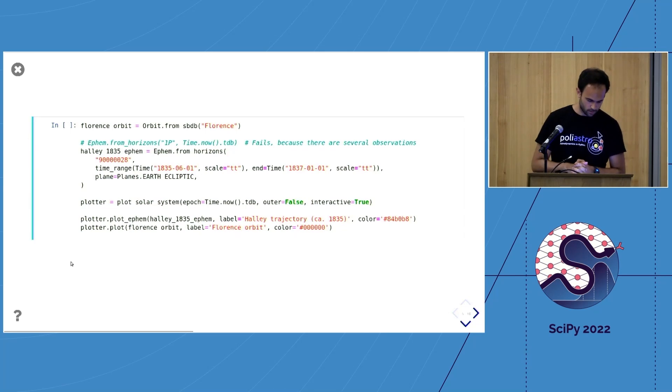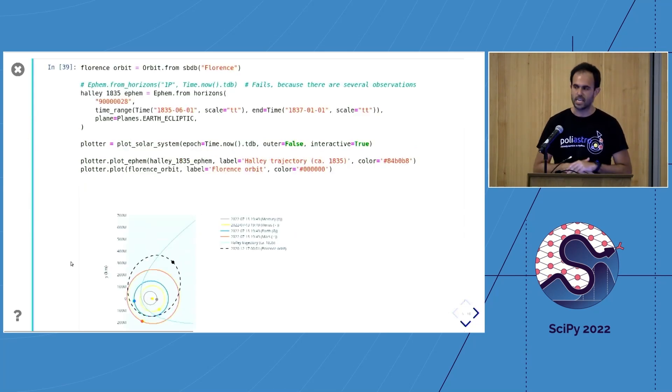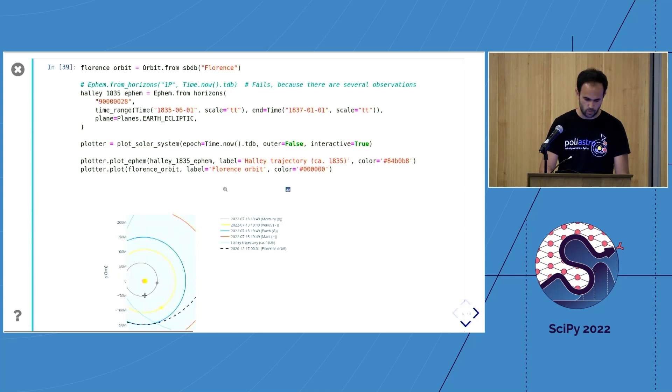To give you two last examples in a more rich setting: this is how you would plot the inner solar system with the orbit of the Florence asteroid that was known to go very close to the earth in 2017, and Halley's trajectory as it was observed in 1835. As you can see, you can do this with a bunch of lines of code, and again you can zoom in, pan, and it's beautiful.